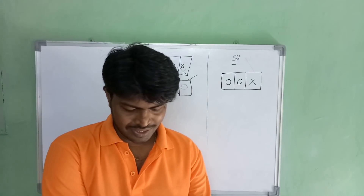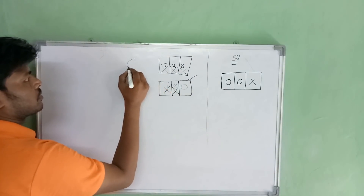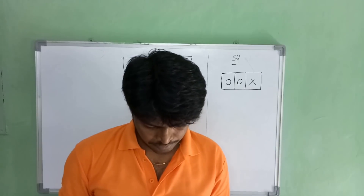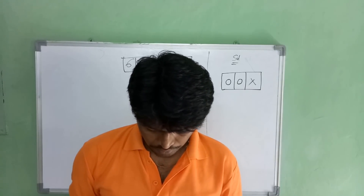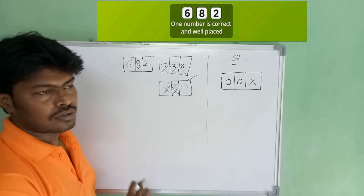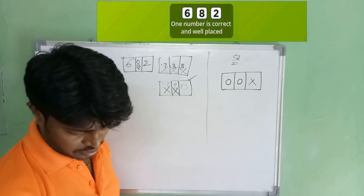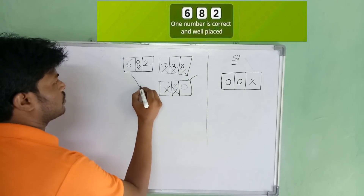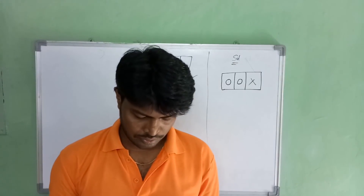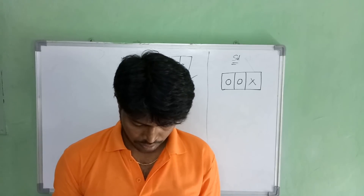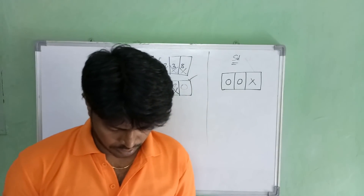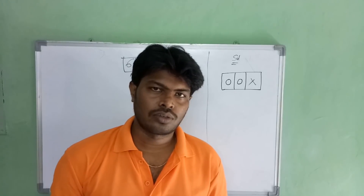Look at the figure 6-8-2. One number is correct and well placed. We know that 8 is not correct, and one number is correct and well placed, so either 6 is correct or 2 is correct and it is well placed.